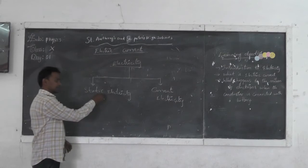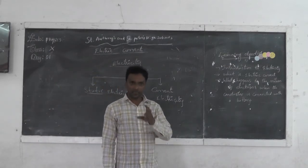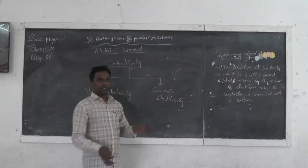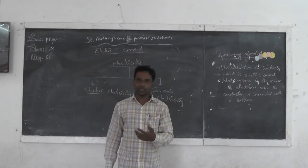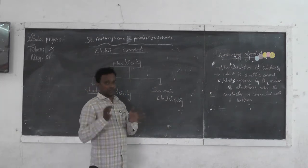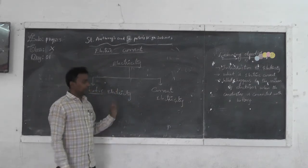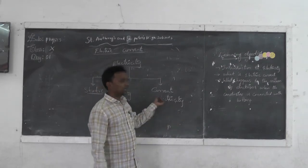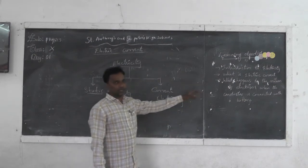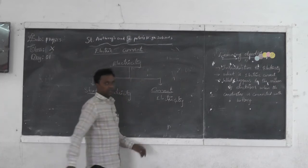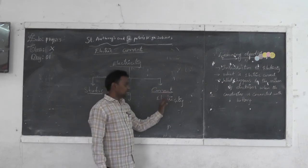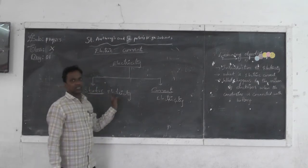The name 'static' indicates 'stationary' — that means the study of charges at rest. That is called static electricity. In static electricity, charges are at one place — like in a cell or battery. If the charges are going from one point to another point, that is called current. Current means motion — flowing from one point to another. So, the study of various effects of charges in motion is called current electricity, and the study of electric charges at rest is called static electricity.